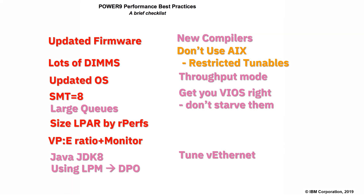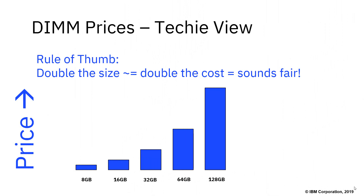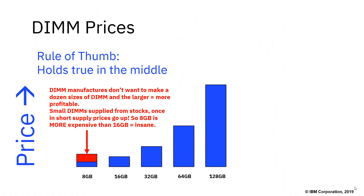A very different topic: we're looking at memory DIM prices. The simple rule of thumb is that as you double the size of memory, it costs about double. Sounds fair — but in practice, that's not what happens. The practical reality is that chip manufacturers for memory don't want to have dozens of different sized DIMs. They're probably producing on different lines — maybe four lines, four different sizes at any one time. Say a manufacturer has now moved into 128GB DIMs; they're no longer making the 8GB DIMs, but they've got plenty of stock. Once the stocks get low, they're in short supply, and it's all supply and demand — they start cranking up the prices of the 8GB DIMs. At the moment I find that some 8GB DIMs are more expensive than the 16GB, so it would be absolutely insane to buy the 8GB DIMs.